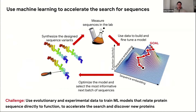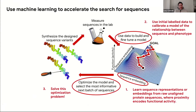There are a few different steps involved in this challenge: figuring out how to build models from experimental data, figuring out how to generate the kind of data that's useful to build those models, and then once we have the model, being able to optimize it and select the most informative next batch of sequences to test in an experimental assay. Overall, using both evolutionary data — millions and billions of sequences — and experimental data to train machine learning models that relate protein sequence directly to function in order to accelerate the search and discover new proteins is what the rest of this talk will cover.